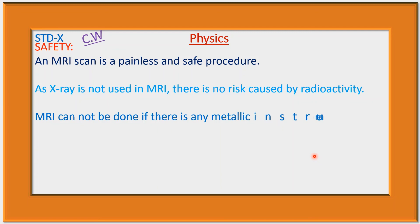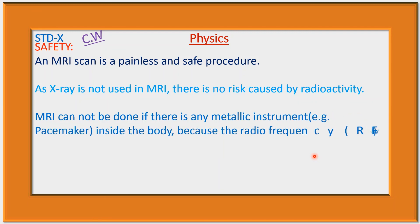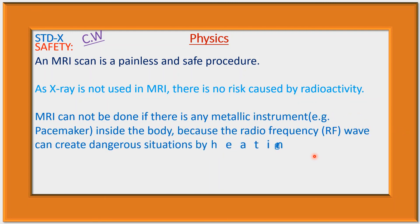MRI cannot be performed if there is any metallic instrument — for example, a pacemaker — inside the body, because the radio frequency waves can create a dangerous situation by heating up the metal. Therefore, MRI is very dangerous for patients with metallic implants.